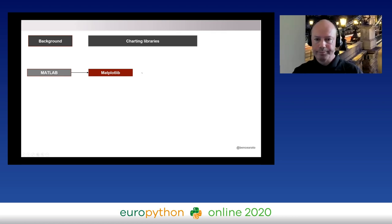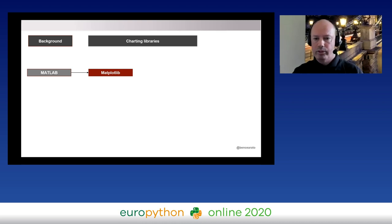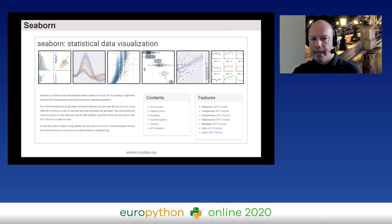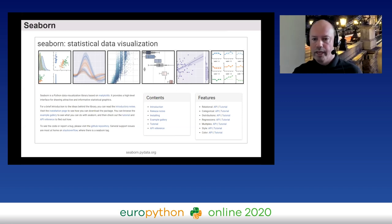One group of libraries built on top of Matplotlib tries to solve that first problem — the verbose, low-level syntax. Seaborn is one such library. Its goal is to provide a higher-level API on top of Matplotlib, making it easier to create charts with nicer visual defaults. Seaborn charts look good without further adjustments, and it has a special focus on statistical charts.